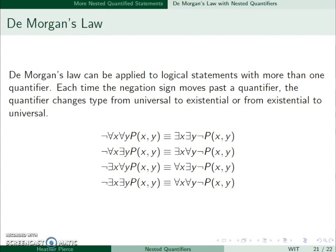The second case, the negation of ∀x∃y P(x,y), the universal would change to existential and the existential would change to universal. So we have ∃x such that ∀y ¬P(x,y). And you can see this pattern continues down. All the universal will change to existential, all the existential will change to universal, and then we negate the predicate.